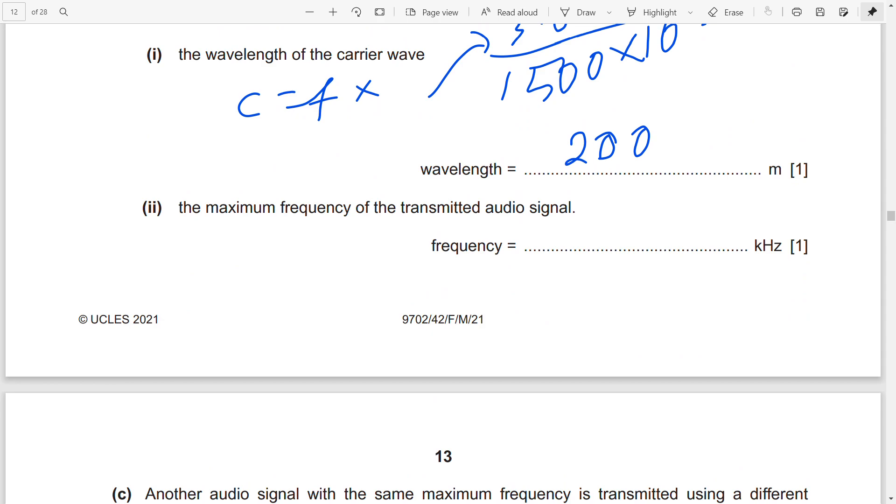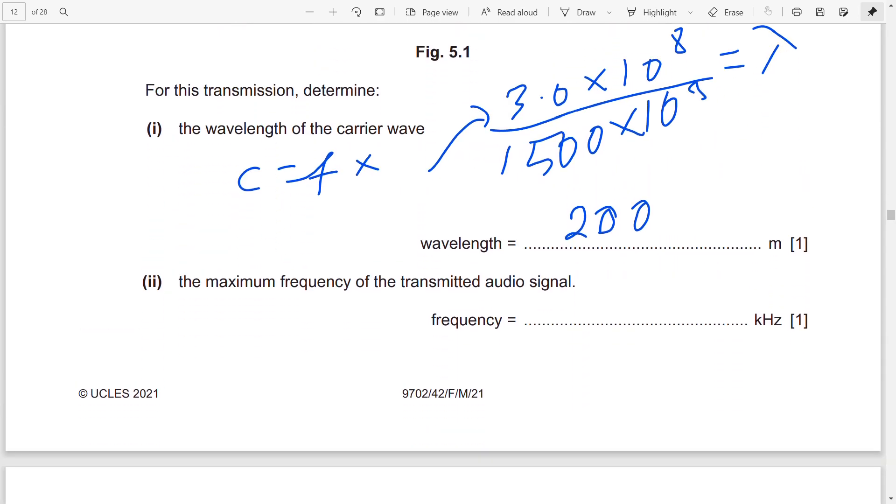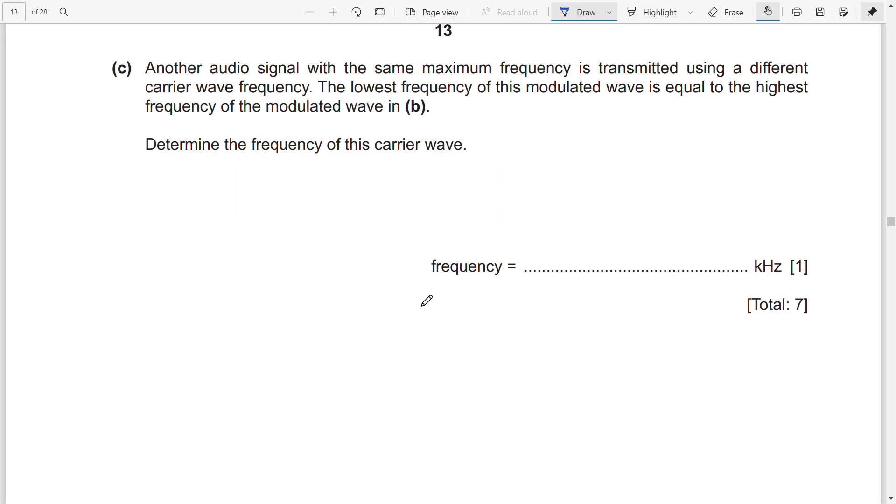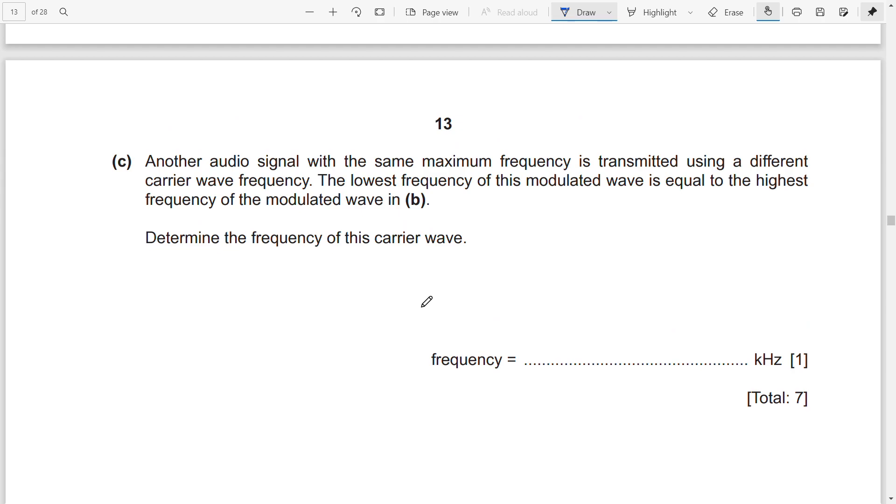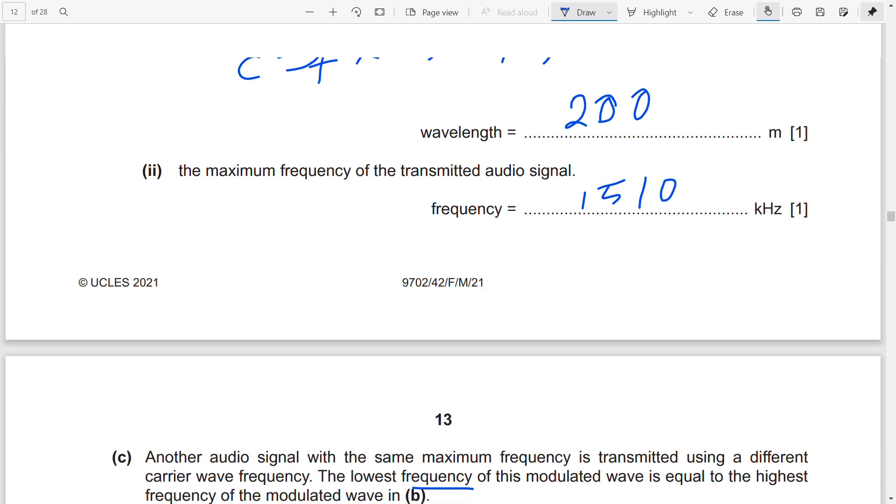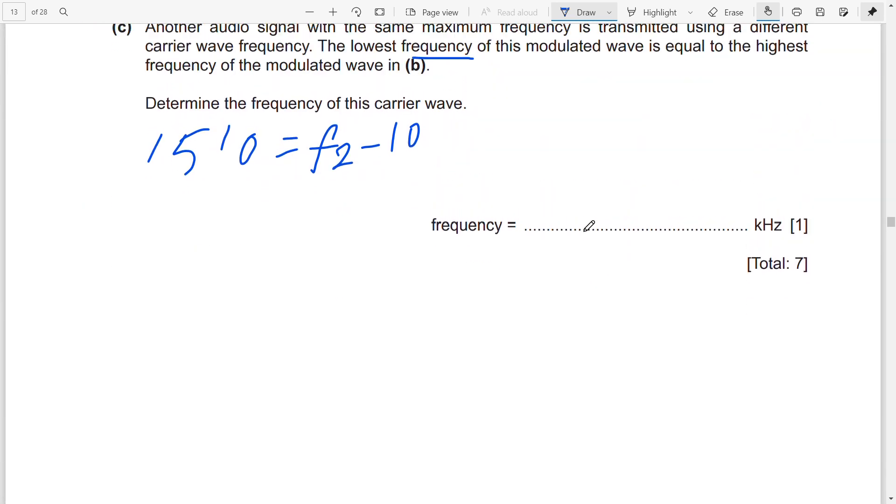Maximum frequency of the transmitted audio signal: this is very simple, it's 1510 - 1500 = 10 Hz. Here, another audio signal with the same maximum frequency is transmitted using a different carrier wave frequency. The lowest frequency of this modulated wave is equal to the highest frequency of the modulated wave in B. You know the difference is 10, and from here 1510 = f₂ - 10. Therefore f₂, the carrier wave frequency, is 1520 Hz.